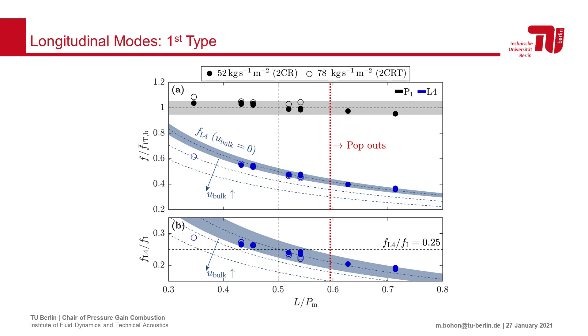From the strong correlation of measured and expected frequencies for various combustor lengths, as well as the occurrence only under low mass flow rates, we can conclude that this first type of longitudinal mode is clearly associated with the quarter wave resonance and the acoustics of the combustor.